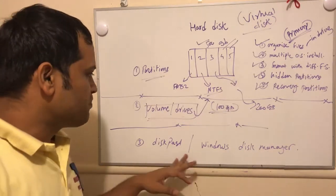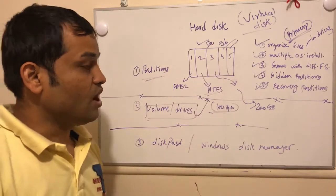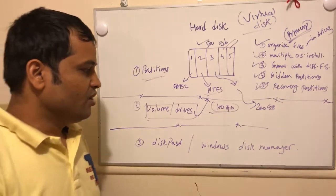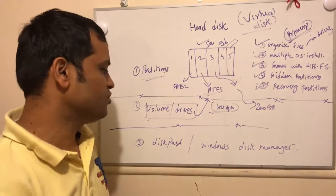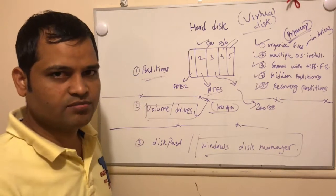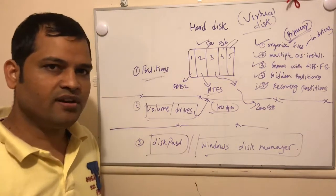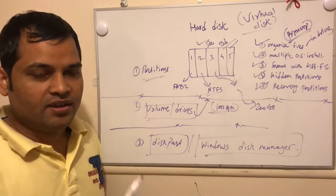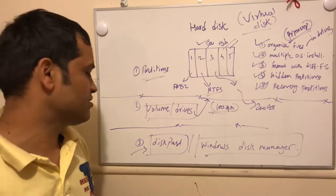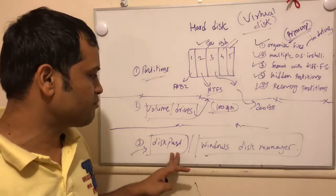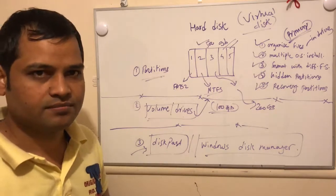Next, I am going to talk about Disk Part and Windows Disk Manager. These tools are used to create partitions. Using Windows Disk Manager, you can create partitions, merge partitions, and split partitions — it is a GUI software that comes built in with Windows. There are also open source softwares you can use. Another utility is Disk Part, which is a command line utility — earlier it was called fdisk, but now it is called Disk Part. Using Disk Part, you can create different partitions, format those partitions, and create volumes and drives.